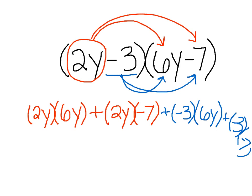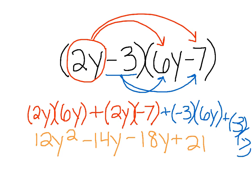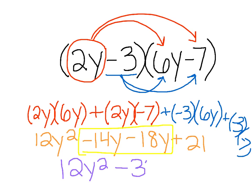Now if we simplify: 2y times 6y — 2 times 6 is 12 and y times y is y squared, giving 12y squared. Then 2 times negative 7 is negative 14y. Then negative 3 times 6 is negative 18y. And negative 3 times negative 7 — two negatives make a positive — so plus 21. Combining negative 14y minus 18y gives minus 32y. Our final answer is 12y squared minus 32y plus 21. That's how to multiply polynomials using the distributive property.